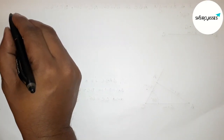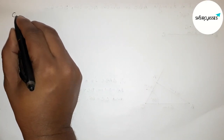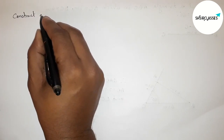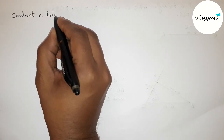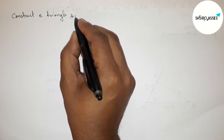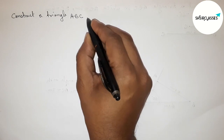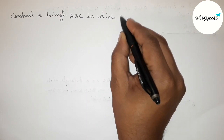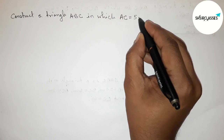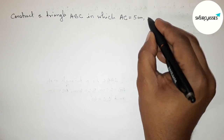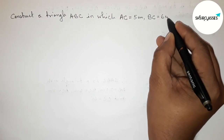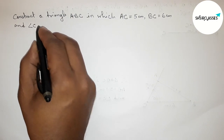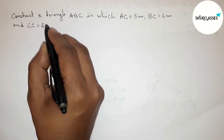Hi everyone, welcome to a size share class. Today in this video we have to construct a triangle ABC in which AC equals 5 centimeter, BC equals 6 centimeter, and angle C equals 60 degrees. Please watch the video till the end.